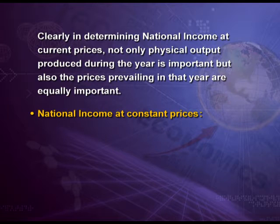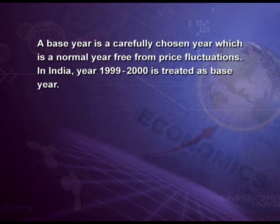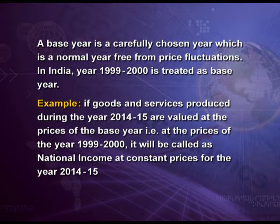National income at constant prices is calculated when goods and services produced in a year are valued at fixed prices, that is the prices of a base year. A base year is a carefully chosen year which is a normal year, free from price fluctuations. In India, the year 1999-2000 is treated as the base year. For example, if goods and services produced during 2014-15 are valued at the prices of 1999-2000, it will be called national income at constant prices for the year 2014-15.